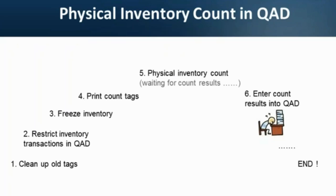Should I start entering tag count results from the first team if the third team didn't finish the count yet? Do I have all the tags? How many tags are missing? Is this handwritten number on the tag 36 or 86? Had I already entered this tag into QED or not? I can cross some of these worries off my list by entering count results with the physical count data loader.